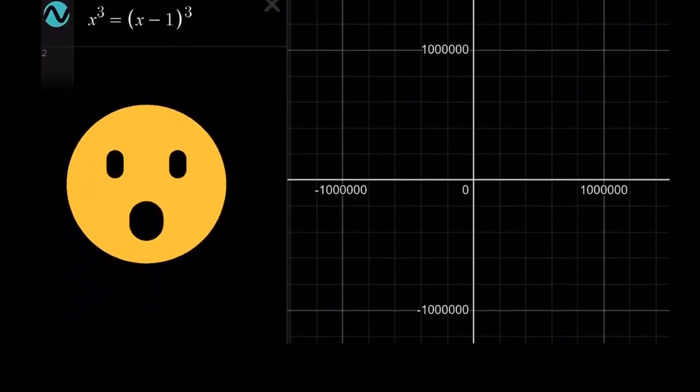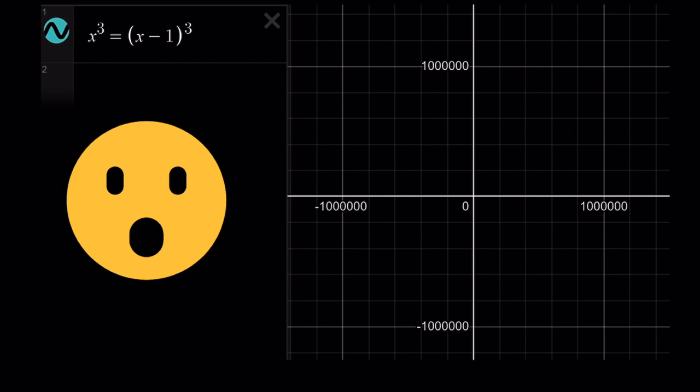Uh-oh. We have the graph of x cubed because x minus 1 cubed. But unfortunately, even at the 1 million level, there's no graph. Why? Because these two curves. Let's find out.